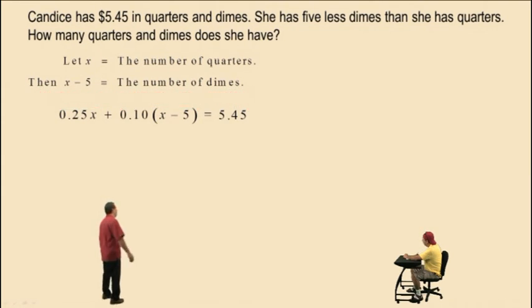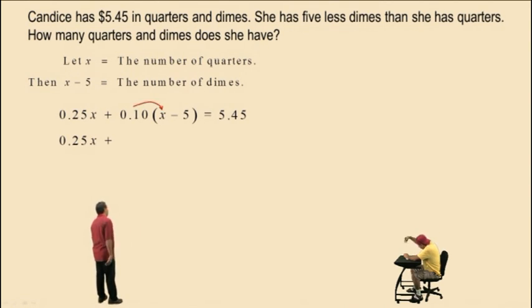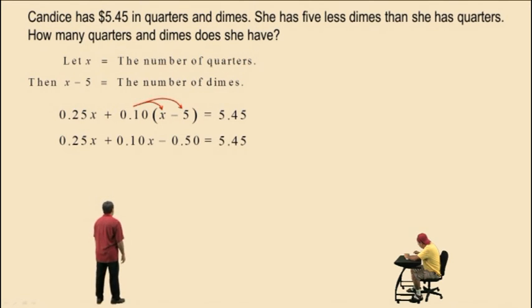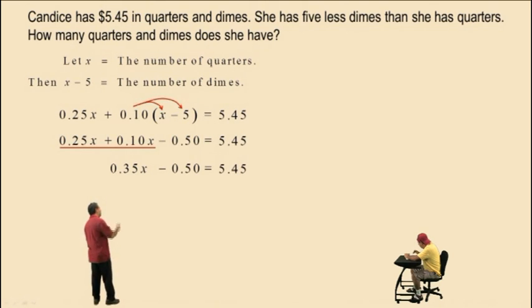Now we've got to solve for x. Notice we have parentheses, but we can't combine what's in the parentheses because they are not like terms. But how do we get rid of the parentheses? What property do we use, Charlie? The distributive. Very nice there. Okay, so we have .25x. Now we have 0.10 times x, which is .10x. Subtract. 0.10 times 5 is 0.50. And this is equal to 5.45. Now we combine like terms. .25x plus .10x is .35x. And let's bring down our work. Now let's move up here.